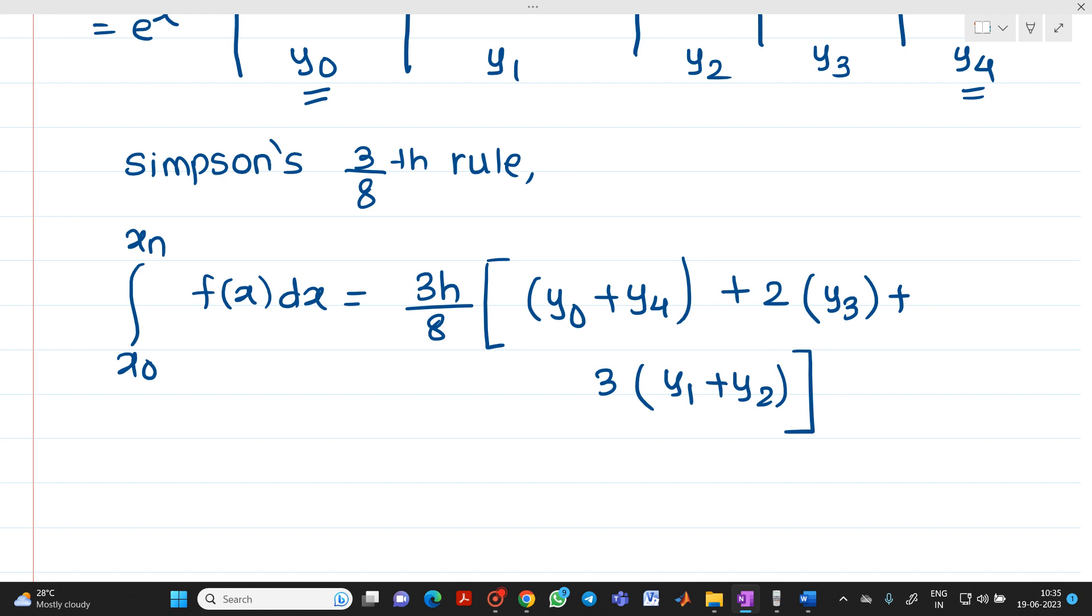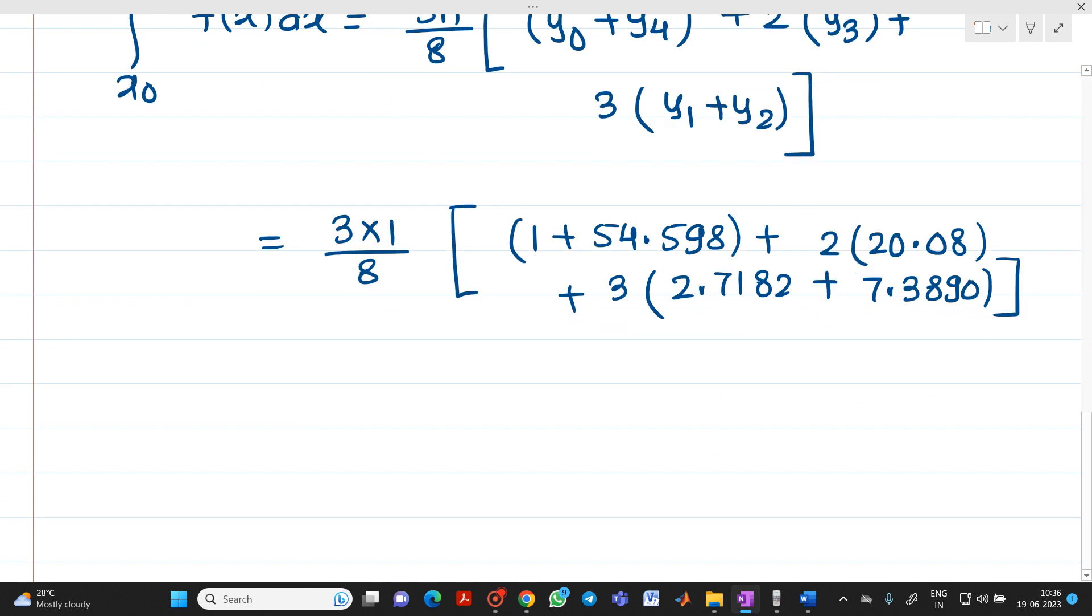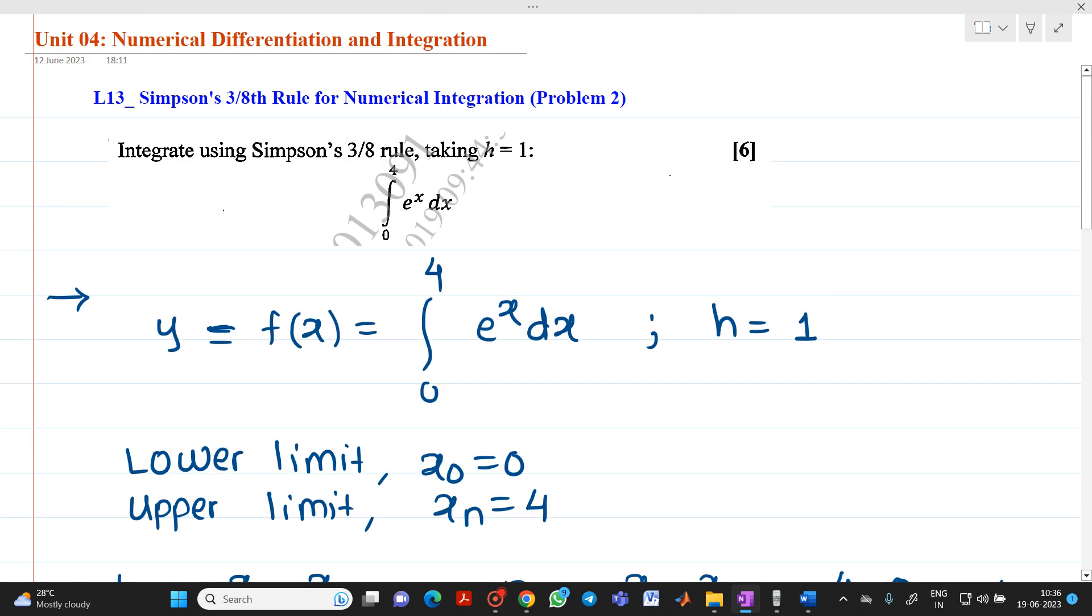Substituting the values we have, it will be 3 times 1 divided by 8 into bracket y0 is 1, y4 is 54.598, plus 2 into y3 which is 20.08, plus 3 into y1 is 2.7182 plus 7.3890. If you calculate this by substituting all values term by term, we get the answer of e raised to x dx with limit from 0 to 4 equal to 51.07005. This is the answer and we have seen how to solve Simpson's 3 by 8 rule for numerical integration. Thank you for watching this video.